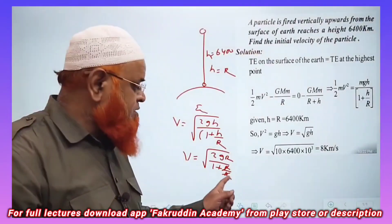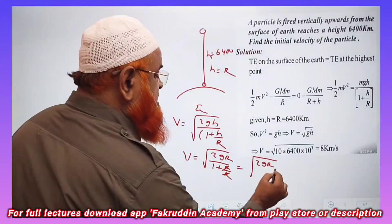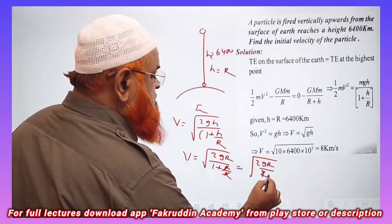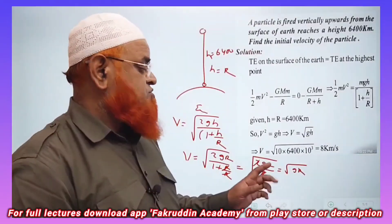Therefore we can write square root of 2gr divided by 2. Therefore 2 and 2 gets cancelled. Your answer is square root of gr directly. So g and r radius, we got it directly.